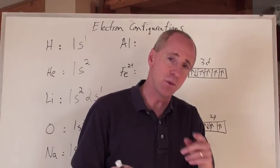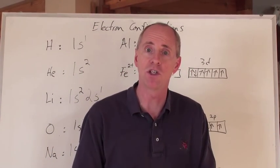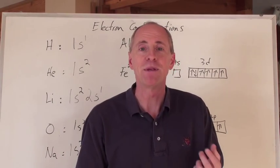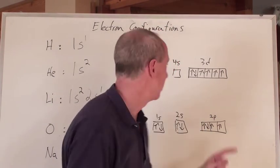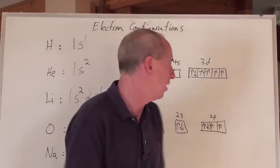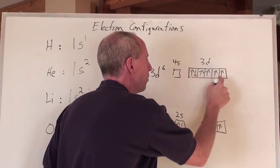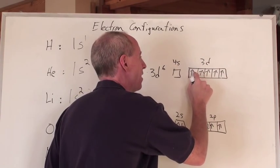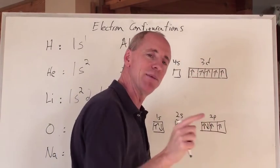But iron also likes to form a 3 positive charge. Why? Because if you add just a little bit more energy, this guy who's doubled up with his friend here saying, I don't like being in the same orbit, look at all these guys who get to have their own orbitals and we have to share, I'm out of here.